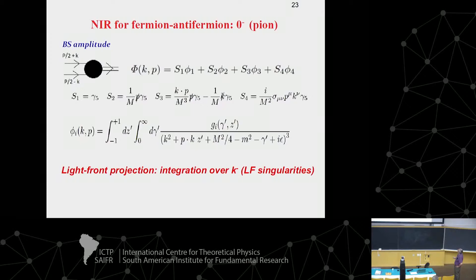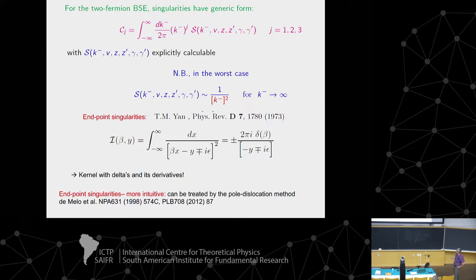How do we solve this? We write each of the invariants of the Bethe-Salpeter amplitude — there are four in this case — in terms of the Nakanishi representation, because they are scalars just as in the boson case. We plug this representation into the integral equation and solve it. Using the light-front projection, we must be careful because there are endpoint singularities that were treated by colleagues Pacheco and Bayan, and we take care of that.